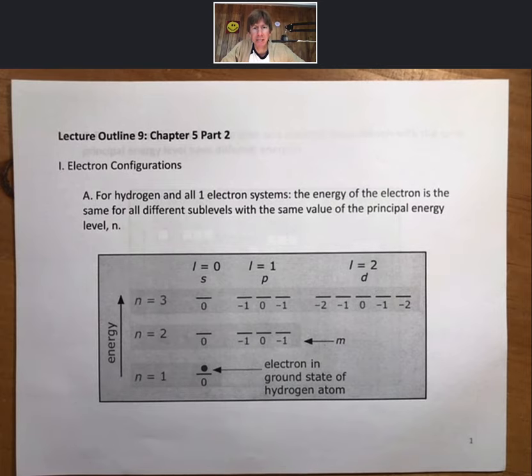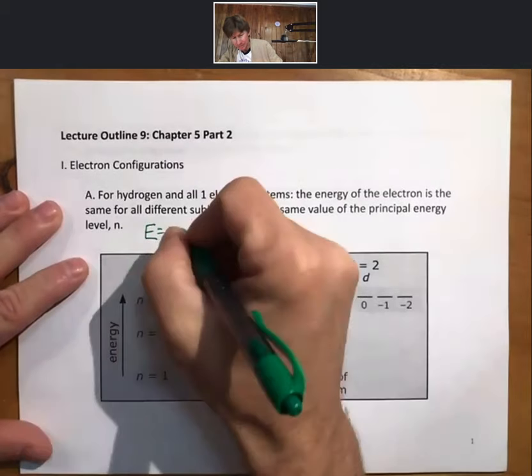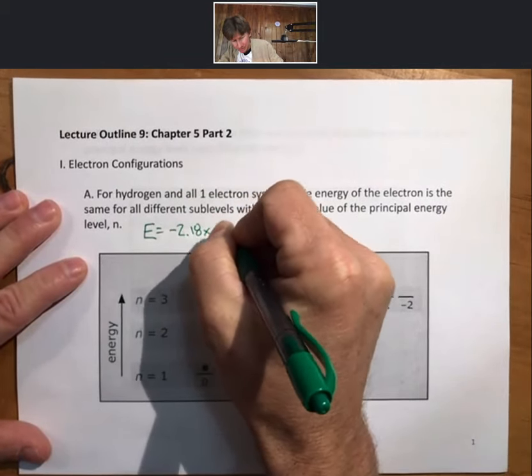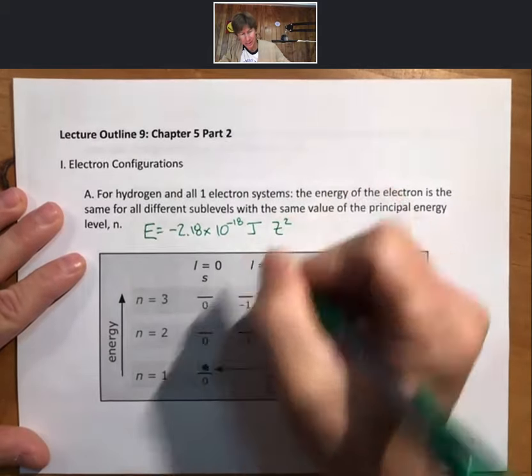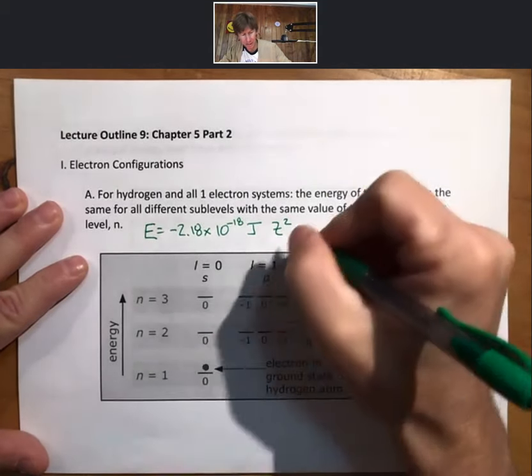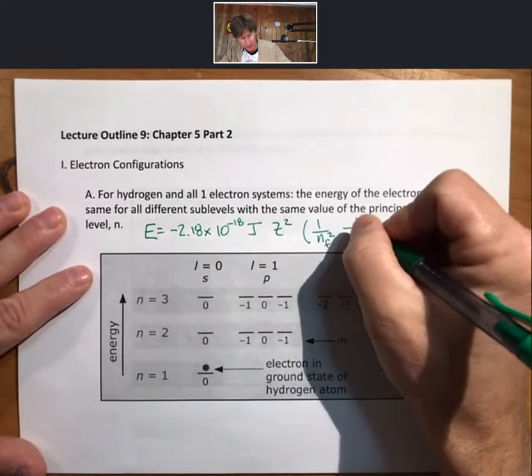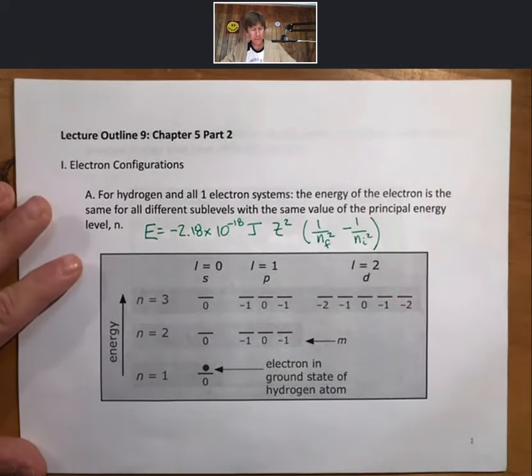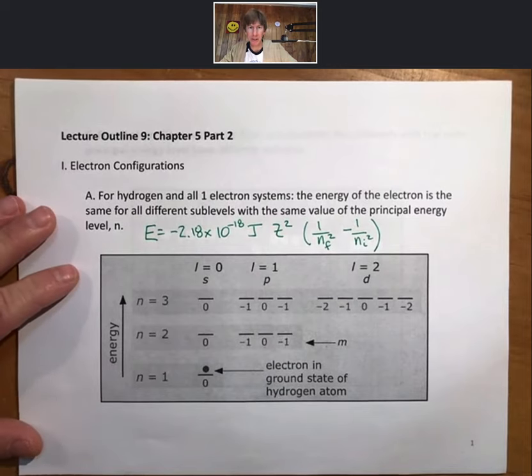The energy of the electron is the same for all different sublevels with the same value of the principal energy level, n. We have an equation for this. These are the one-electron systems. Energy equals minus 2.18 times 10 to the minus 18 joules times z squared times the quantity 1 over n final squared minus 1 over n initial squared. And this equation, for hydrogen and all one-electron systems, does not depend on sublevel.